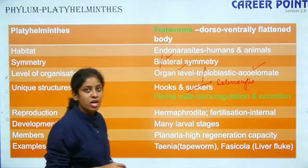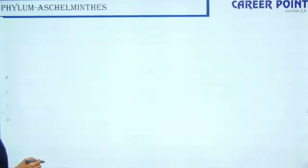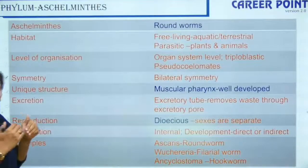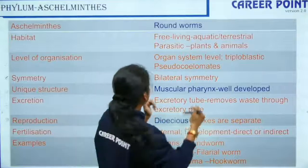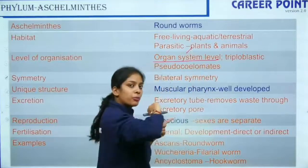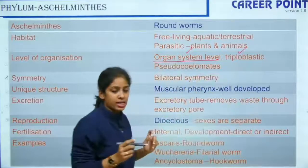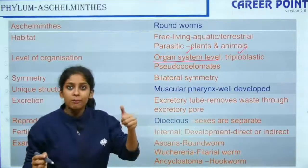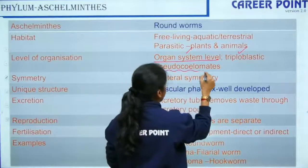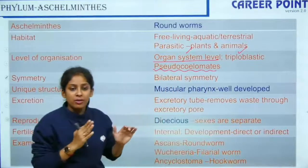Examples of Platyhelminthes include Taenia (tapeworm) and the liver fluke Fasciola. Moving to the next phylum, Aschelminthes, we have moved from organ level to organ system level. The previous phylum was triploblastic and acoelomate, but Aschelminthes is pseudocoelomate — this is the only phylum in animal kingdom with a pseudocoelom.